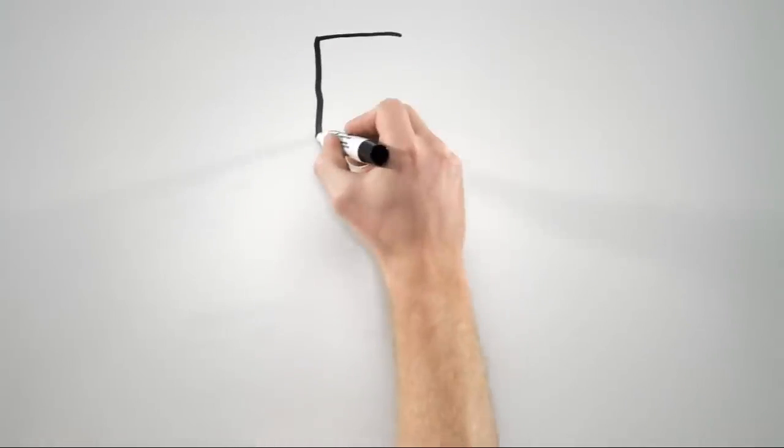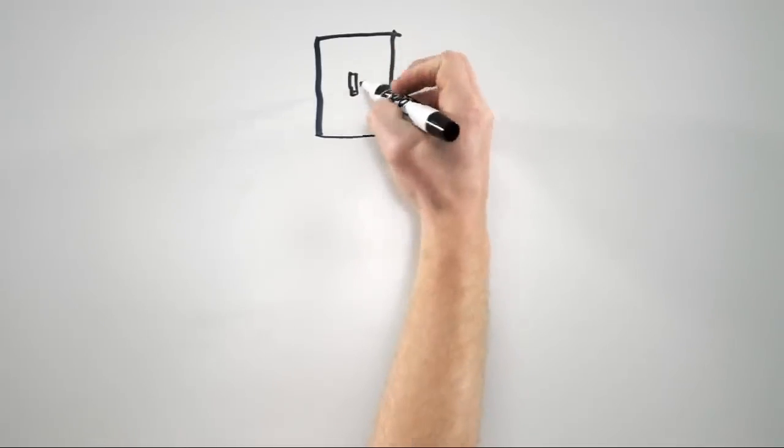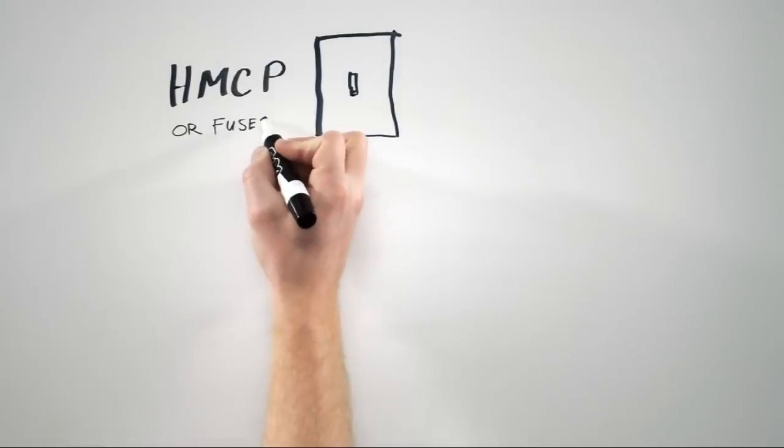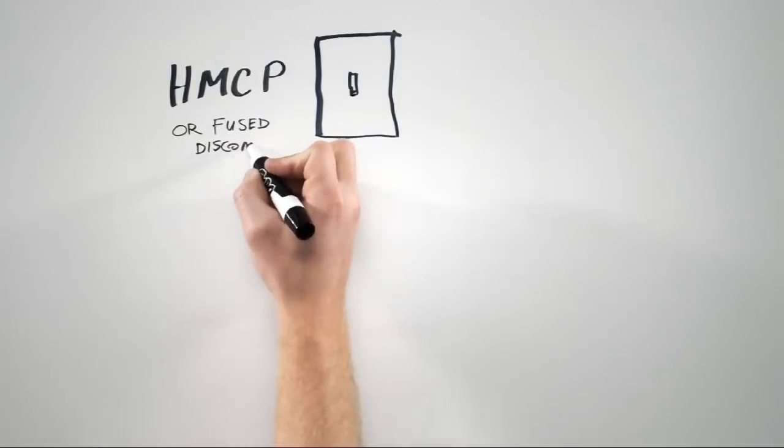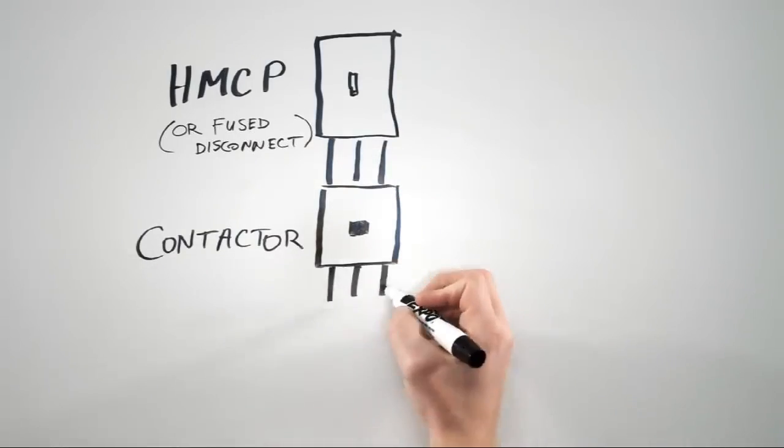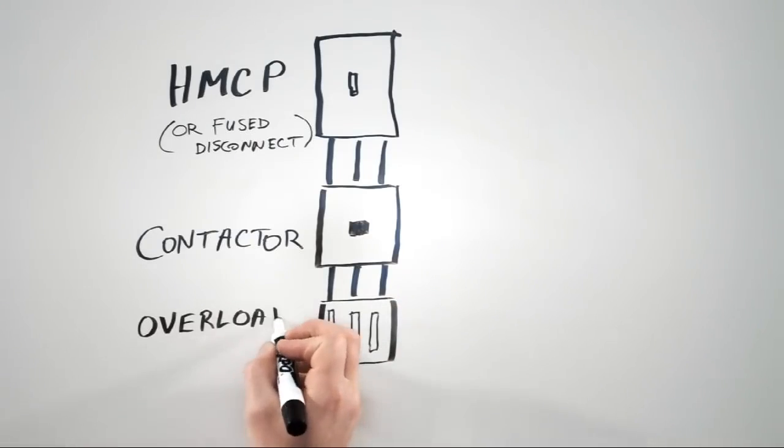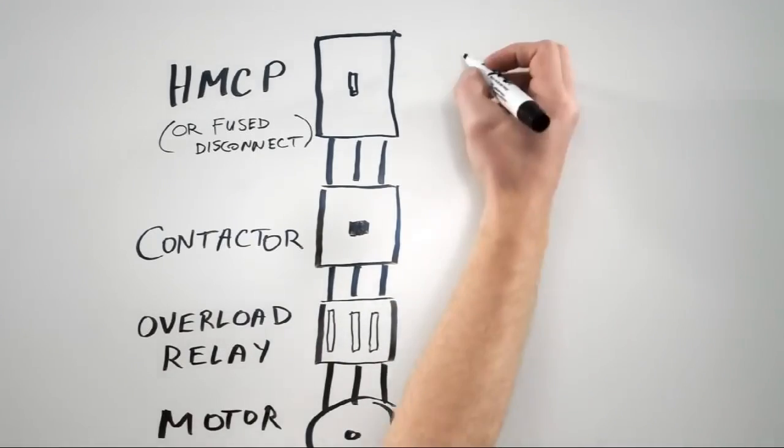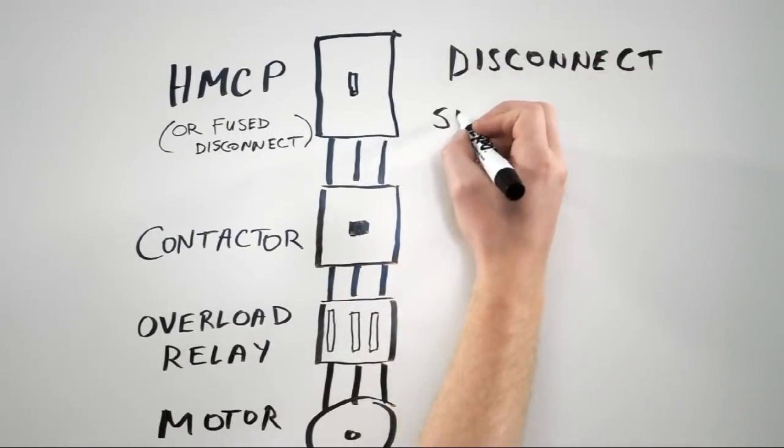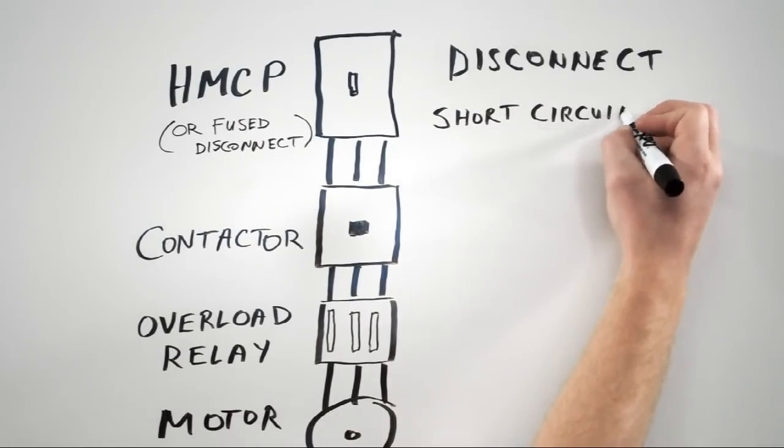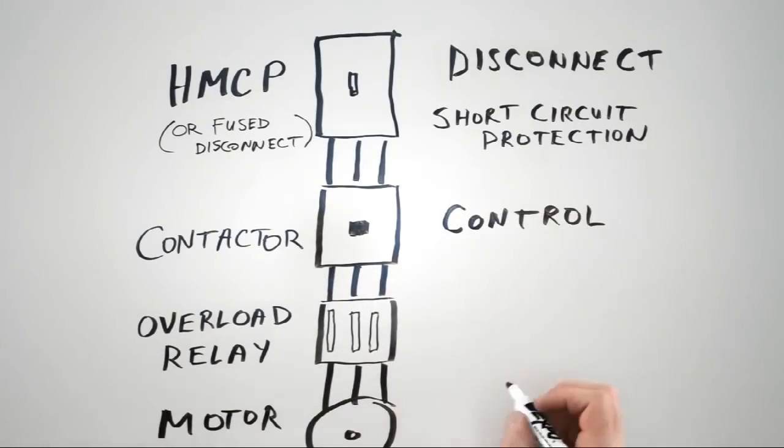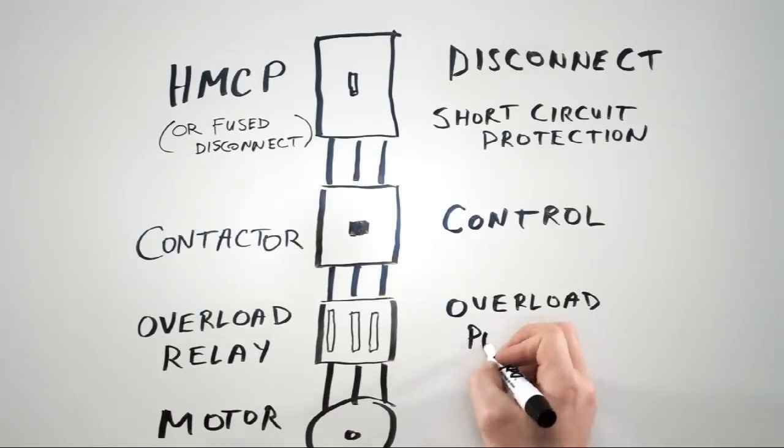Now that we've covered motor protection and motor control, let's put it all together. At the top of the circuit we have our HMCP breaker, or alternately we could use a fused disconnect switch. Next we have the contactor, followed by the Overload Relay. Lastly, we have the cables connecting the Overload Relay to the motor. In this setup, the HMCP provides a way to disconnect the entire circuit from power, as well as providing short circuit protection, since it still has the magnetic protection inside. The contactor provides a means of controlling the motor, and then finally the Overload Relay protects our motor from overload conditions.